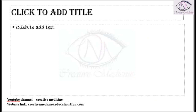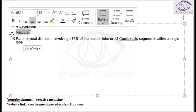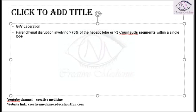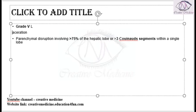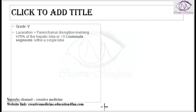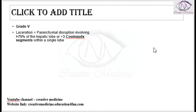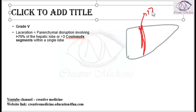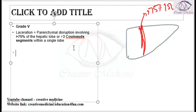Then we have Grade 5. In Grade 5, there is laceration involving parenchymal disruption of 75% or more of a hepatic lobule, or there is involvement of more than 3 Couinaud segments in a single lobe.